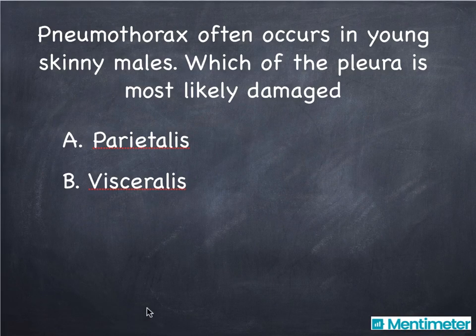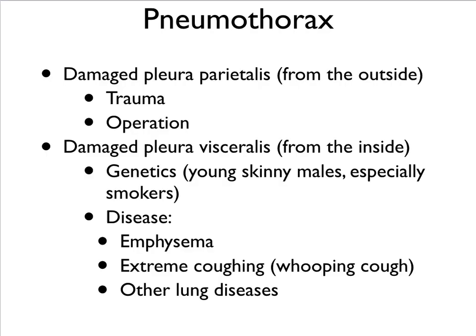Pneumothorax often occurs in young skinny males. Which of the two membranes is most likely damaged — the parietal or the visceral membrane? The answer is on the next slide.